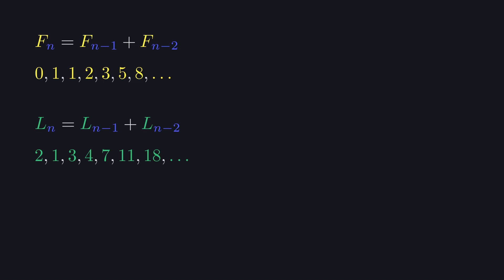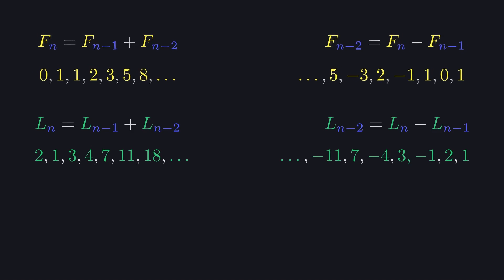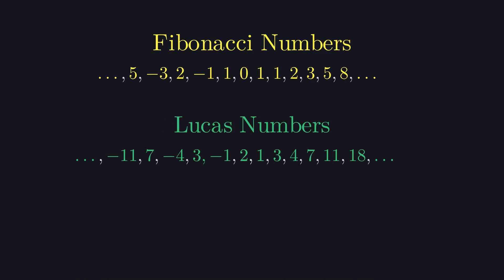We can also run these sequences backwards by just inverting their definitions. So for Fibonacci numbers, before 0 we'd get 1 minus 0, that's another 1, then before that 0 minus 1, a minus 1, and if we keep doing that we'll observe that it's the Fibonacci numbers again, only this time they appear with alternating signs. The same sort of thing happens when we extend Lucas numbers backwards. We get the same numbers mirrored with alternating signs. They both go on like that forever in both directions.